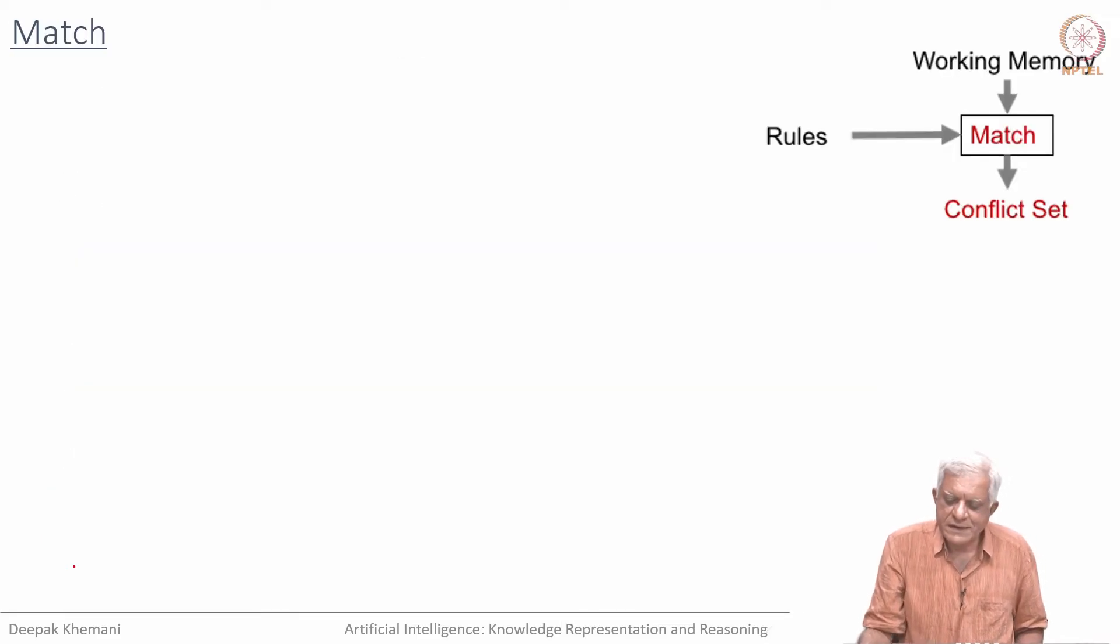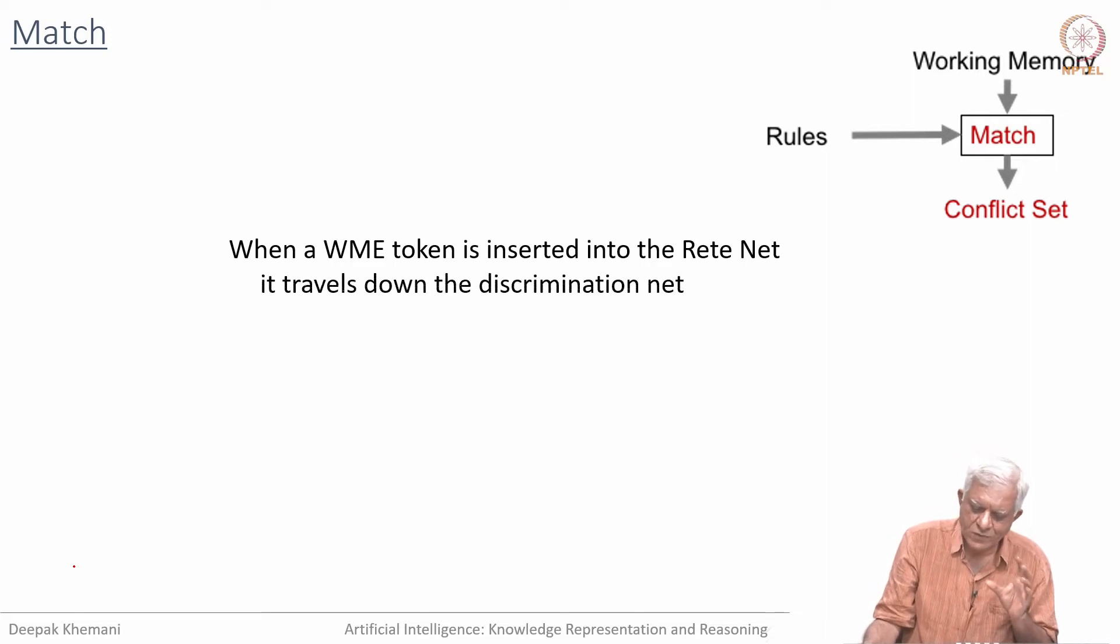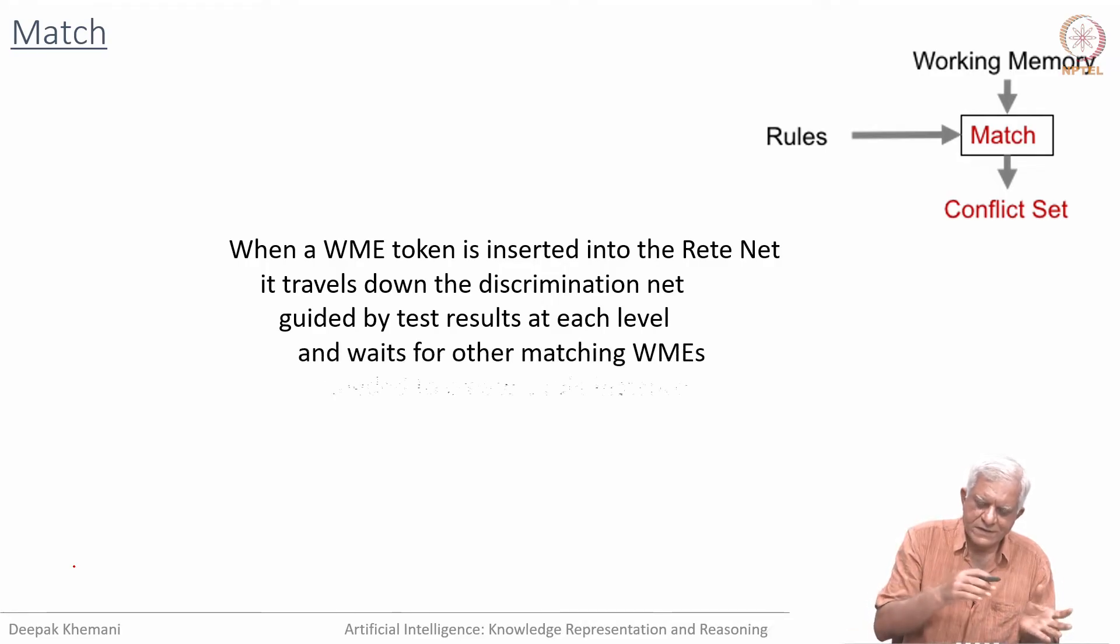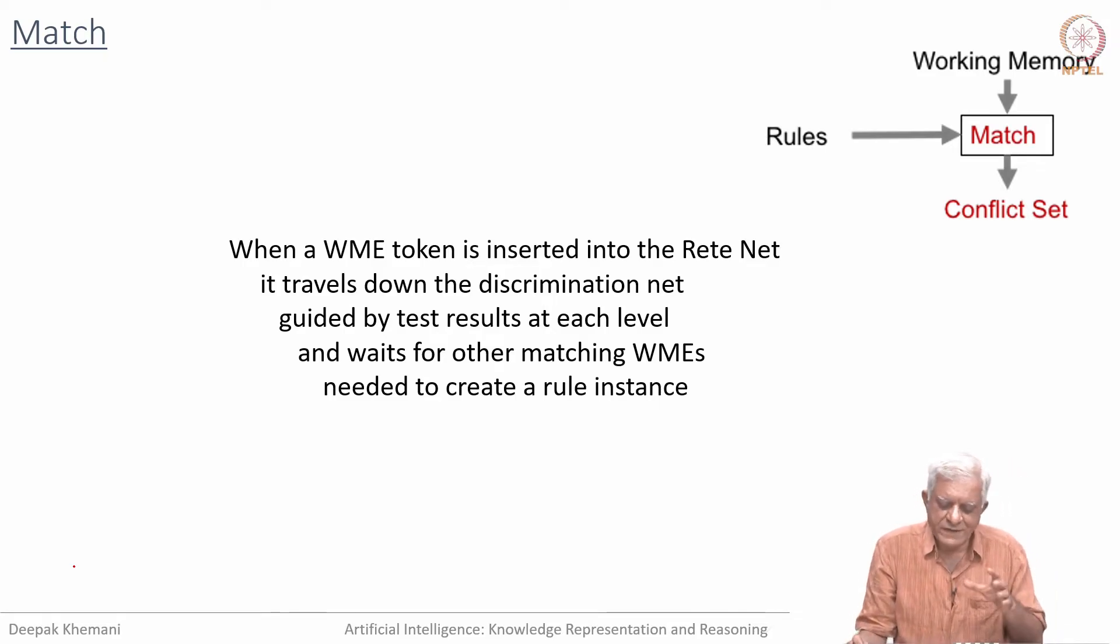Let us look at the match part. When a working memory element token is inserted into the data net, it traverses the network, travels down the discrimination net guided by the test results at each level, and waits for other working memory elements to arrive at the appropriate beta node. Remember that beta nodes collect together different patterns, and then the rule is matching. When you say a working memory token is inserted, there are two kinds of tokens: plus working memory element or minus working memory element. Plus is when the action is make or add a new working memory element; minus is when you are deleting an element.